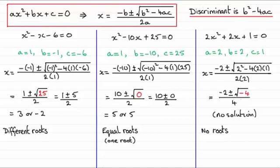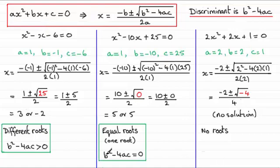So in summary, we get different roots when the discriminant b squared minus 4ac is greater than 0. Equal roots when the discriminant b squared minus 4ac equals 0. And no roots when the discriminant b squared minus 4ac is less than 0.